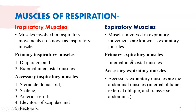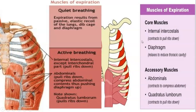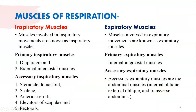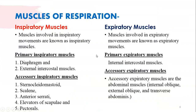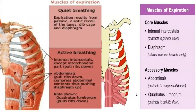For expiration, internal intercostal muscles act as primary muscles. The accessory muscles involved are the abdominal muscles, which include internal oblique, external oblique, and transverse abdominal muscles. You can see these abdominal muscles in the diagram. These muscles act as accessory muscles for expiration. Here we complete the muscles of respiration.